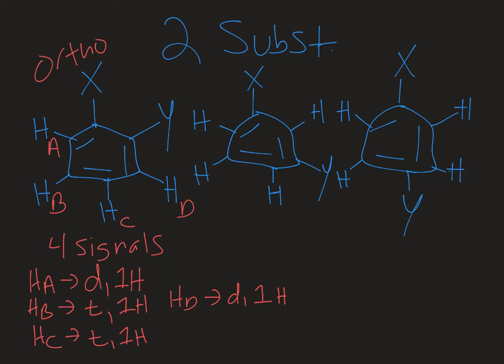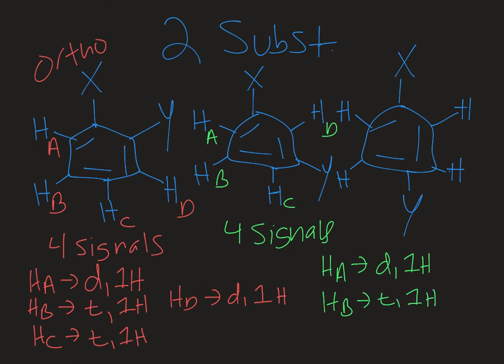Okay, so let's label our meta-substituted compound. We'd have A, B, C, and D. So again, I would have four signals there. So HA would be a doublet with an integration of one. HB would be a triplet with an integration of one. HC would be a doublet with an integration of one. And HD would be a singlet with an integration of one H.